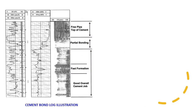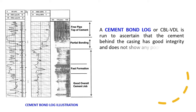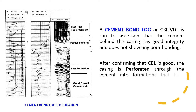A cement bond log, or CBL/VDL, is run to ascertain that the cement behind the casing has good integrity and does not show any poor bonding. After confirming that the CBL is good, the casing is perforated through the cement into formations that have indicated good hydrocarbon potential.